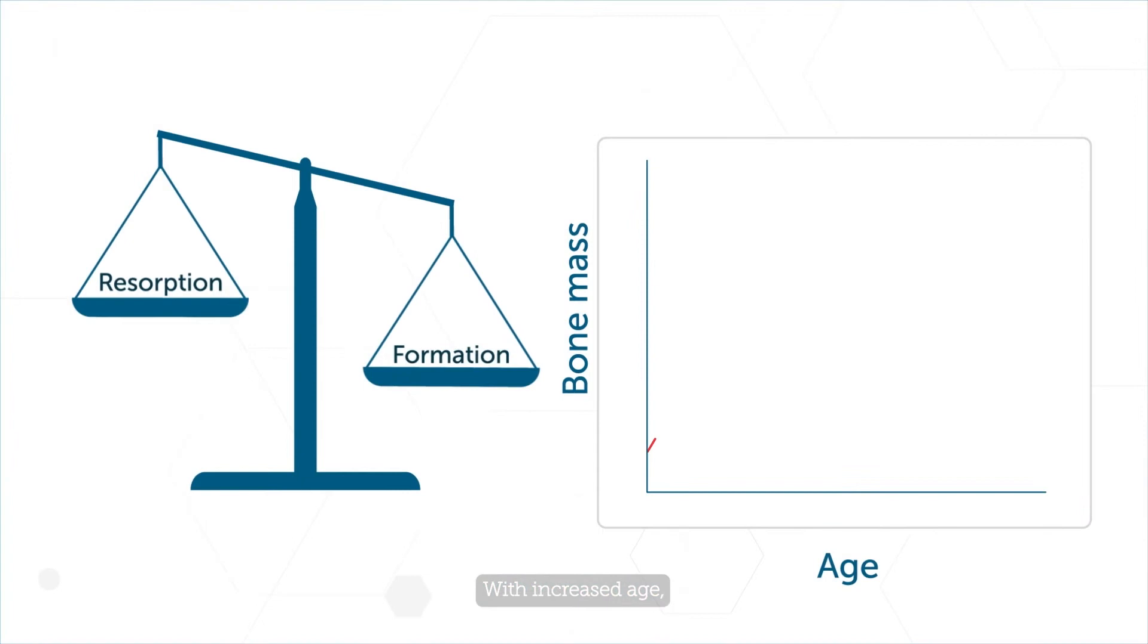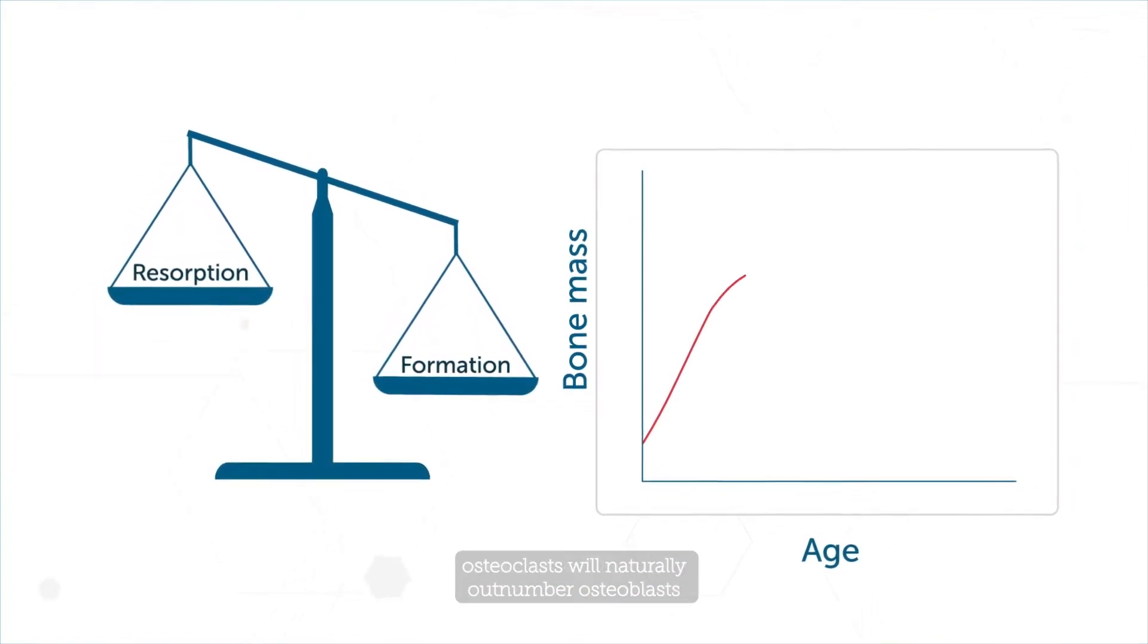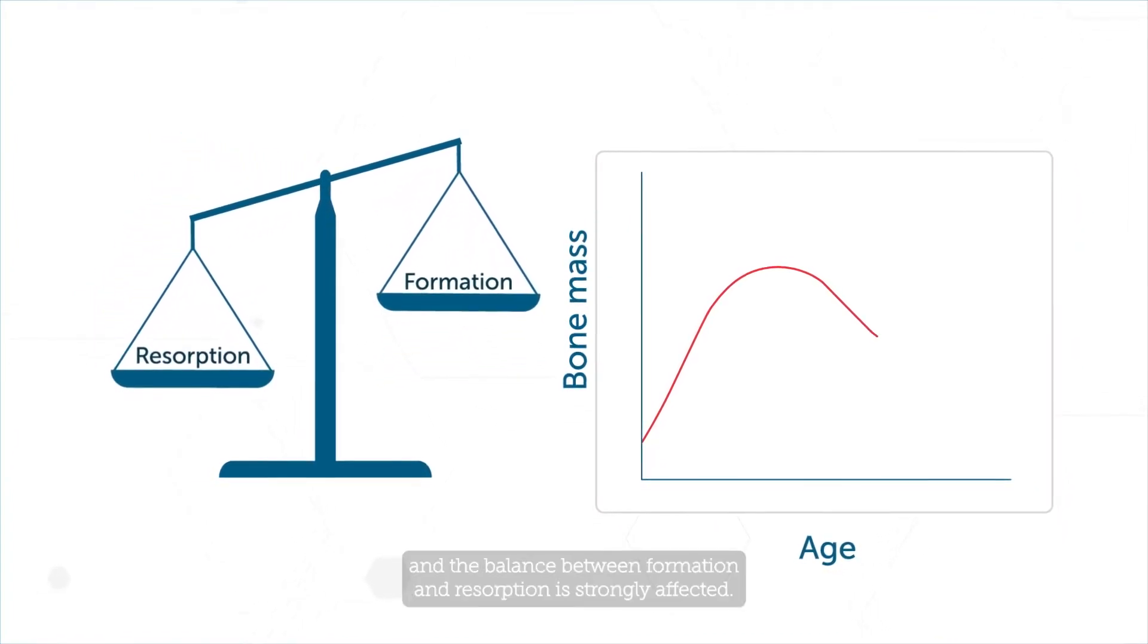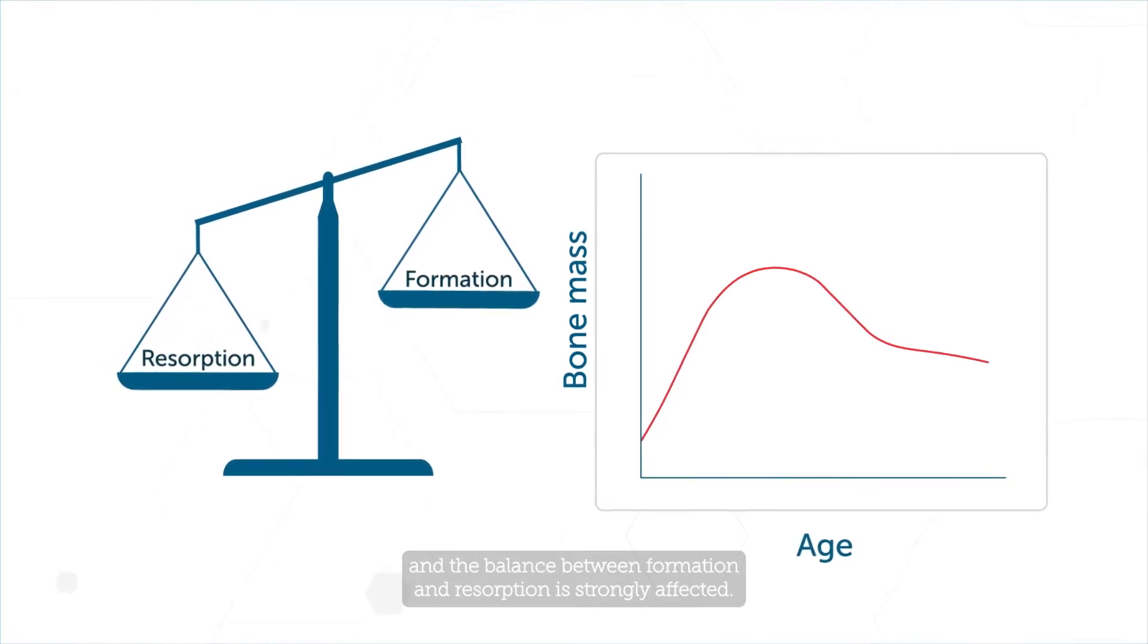With increased age, osteoclasts will naturally outnumber osteoblasts and the balance between formation and resorption is strongly affected.